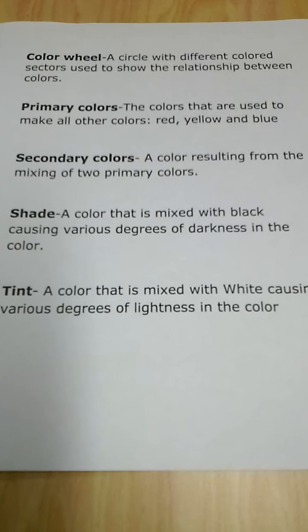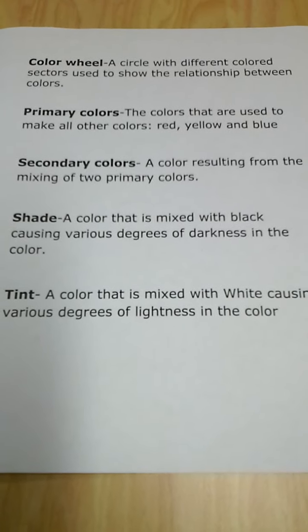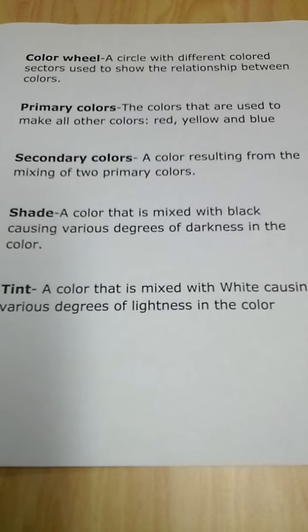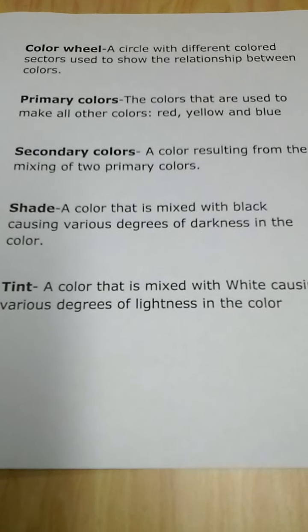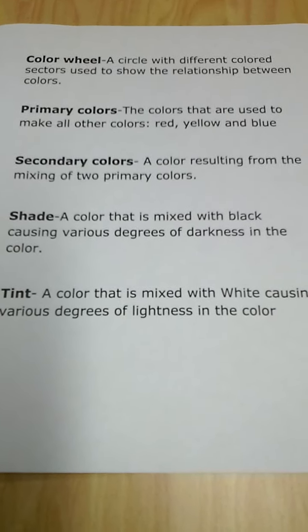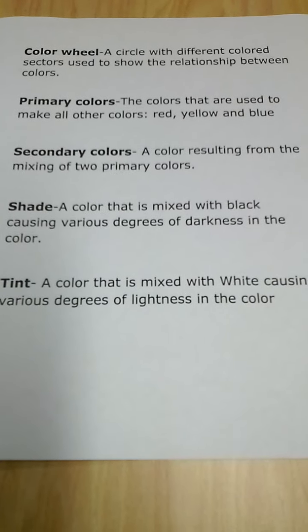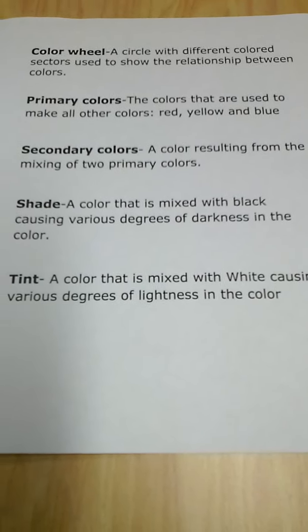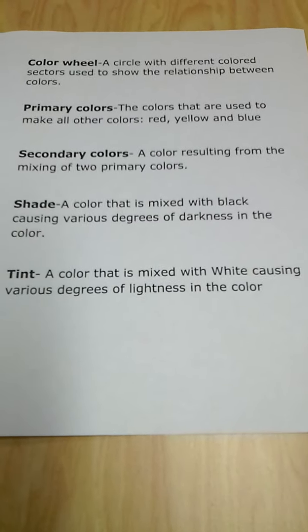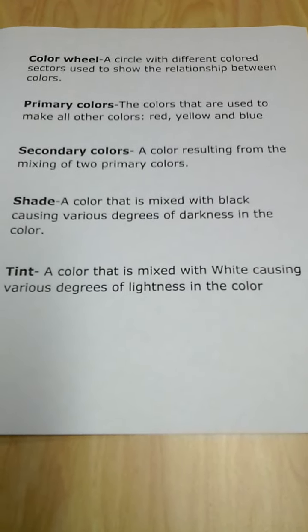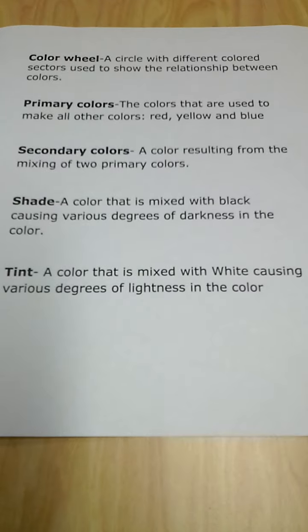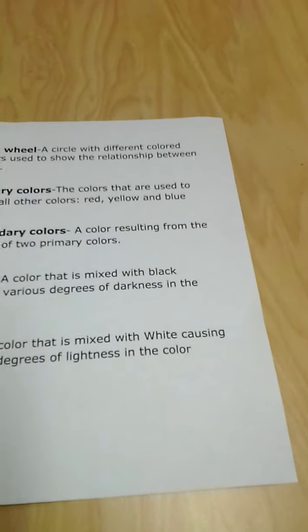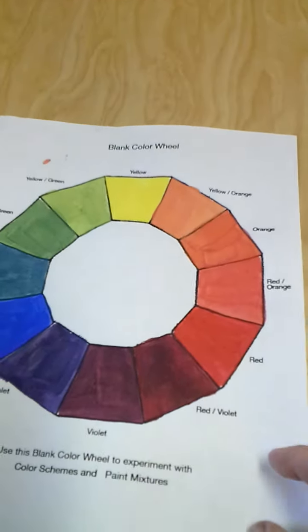and blue. Secondary colors are a color resulting from mixing two primary colors. Shade is a color that is mixed with black, causing various degrees of darkness in the color. Tint is a color that is mixed with white, causing various degrees of lightness in the color.